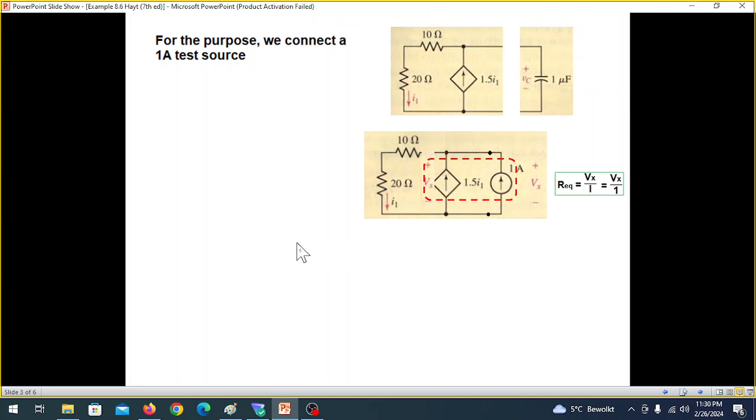And we also can note that both these currents are flowing through these resistances. So we can say that the Vx, this Vx is the sum of the currents multiplied by the resistance. So 1 plus 1.5 I1,